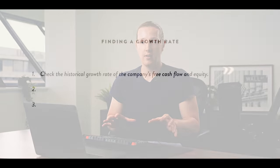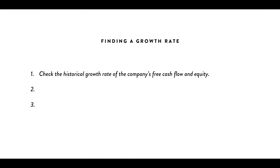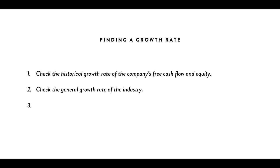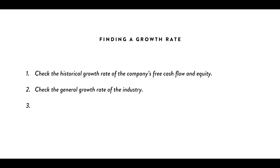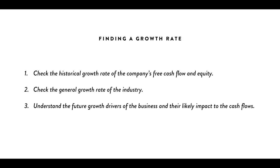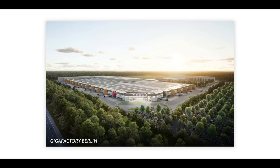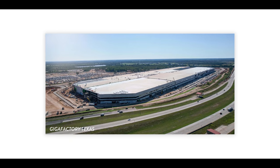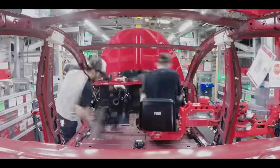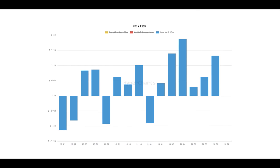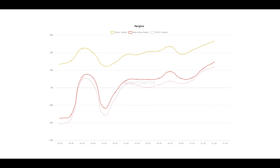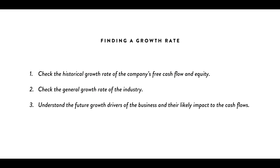Don't convince yourself they're going to grow at 200% annually for 10 years straight — even 25% growth per year is a very high growth rate to use. A few ways to stay grounded: number one, look at the prior 10 years of free cash flow growth and equity growth — how quickly have they grown on average in the past? Two, what is the typical growth rate of the industry? And three, actually understand the future growth drivers for your business and how they will likely impact cash flows. For example, Tesla has two new factories coming online that will ramp up — how will those factories impact vehicle deliveries and free cash flow given current margins? Let's run with 10% per year as a growth rate for this example.